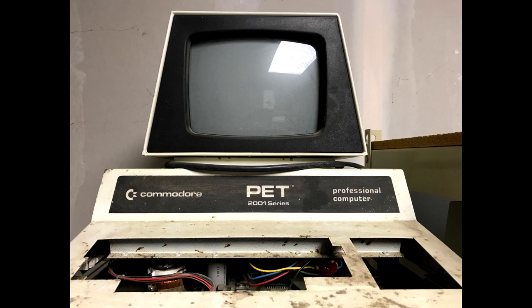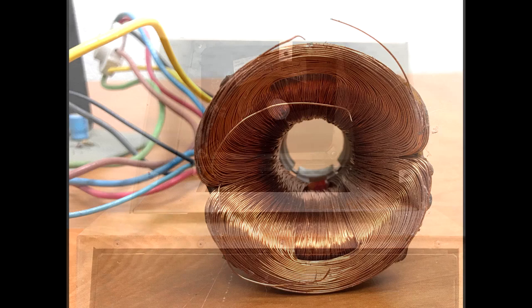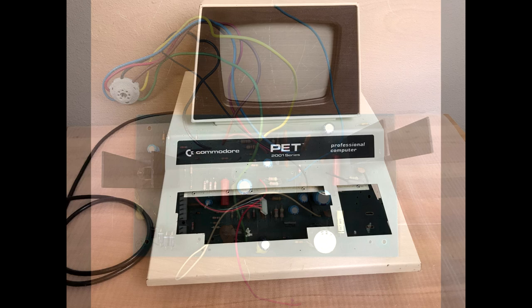As you can see in these photos, it was in really rough shape. There was a lot of rust and it was missing some important parts like the keyboard. The CRT appeared to be in good shape, but the deflection coil was ruined and most of the parts were missing from the monitor PCB.